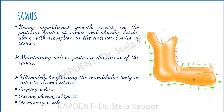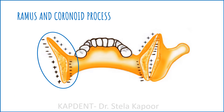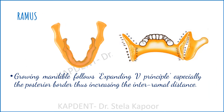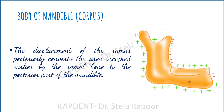As you can see in the schematic diagram, heavy appositional growth occurs on the posterior border of the ramus along with resorption on the anterior border. This maintains the anteroposterior dimension of the ramus during growth and also ultimately lengthens the mandibular body to accommodate the erupting molars, the growing pharyngeal spaces, and increased bulk of the masticatory muscles. A vertical section through the posterior ramus and coronoid region shows periosteal deposition on the lingual surface and removal from the buccal surface in the superior portion, with the opposite pattern in the basal part of the ramus. The entire growing mandible follows an expanding V-principle, especially at the posterior border, resulting in increased inter-ramal distance. With the displacement of the ramus posteriorly, the area once occupied by the ramal bone converts to the posterior part of the body of the mandible.